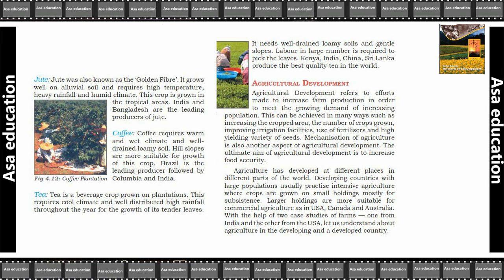Tea is the beverage crop grown on plantations. It requires cool climate and well-distributed high rainfall throughout the year for the growth of its tender leaves. It needs well-drained loamy soil and gentle slopes. Kenya, India, China, and Sri Lanka produce the best quality of tea in the world.